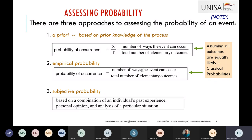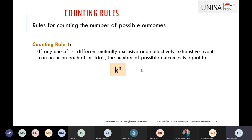Those are the things to remember for basic probabilities. In today's session we're going to start with counting rules. Counting rules help us determine the number of ways of doing something — the number of possible ways of doing things.